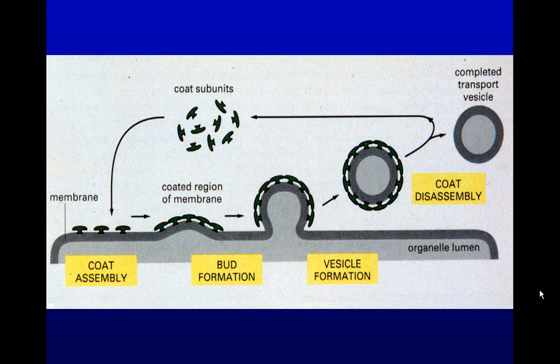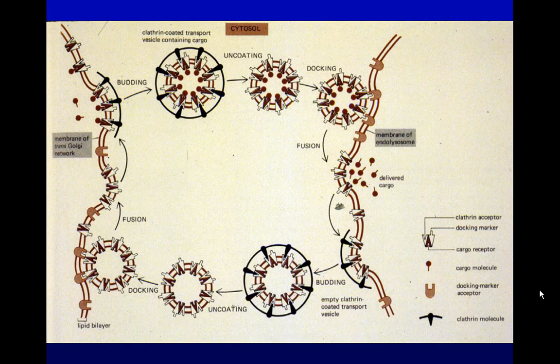Basically, the way it works is: clathrin proteins bind to a flat plasma membrane, it starts to invaginate becoming a coated pit, then it pinches off totally — now it's a coated vesicle. Then it loses its coat, the clathrin is recycled, and you have cargo located in an uncoated vesicle.